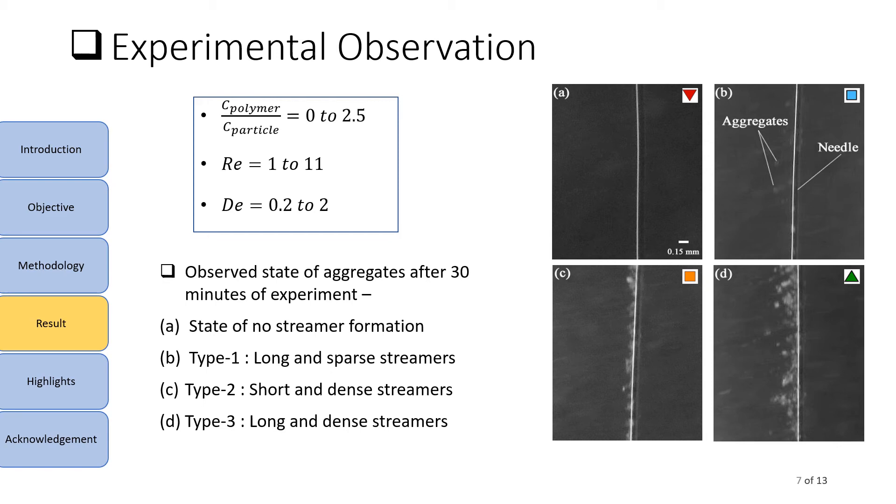Based on the visual observation of morphology obtained after 30-minute-long experiment, we have decided 4 regimes. First is the absence of streamer formation. Second is type 1 streamers - these streamers are long but sparsely distributed along the length of the needle. Then we have type 2 streamers - these streamers are short but densely distributed along the length of the needle. Finally, we have type 3 streamers, which are sufficiently long as well as densely distributed along the length of the needle.